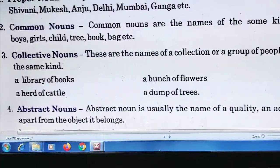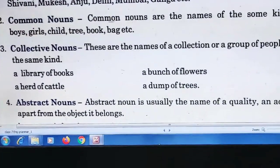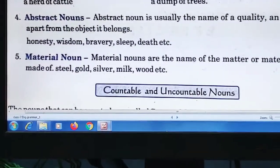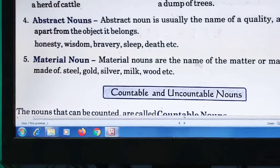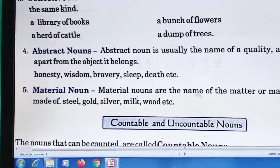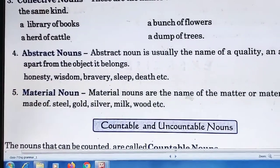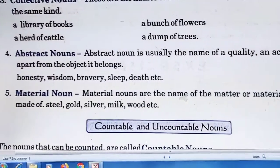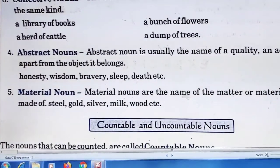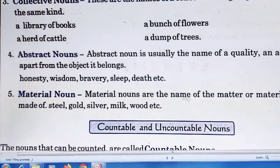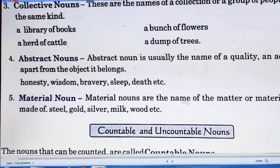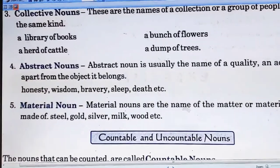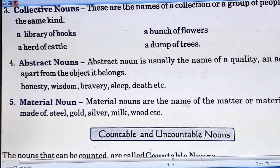Abstract noun is usually the name of a quality, action, or state apart from the object it belongs to. Abstract nouns cannot be touched, but we can feel them. For example, honesty — you appreciate someone's honest work, but you cannot see honesty; you can only feel it. That is an abstract noun.